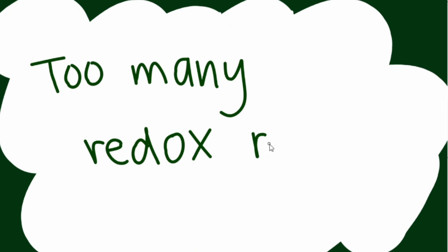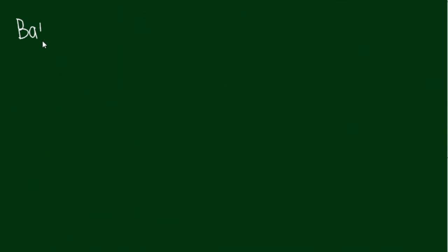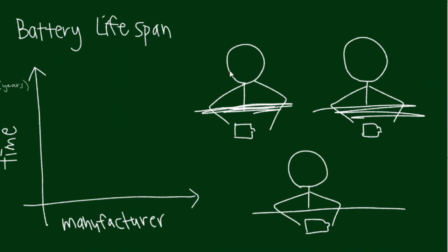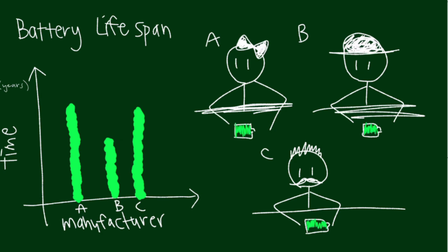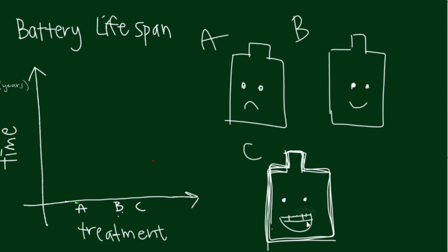The electrons lose a place to be stored inside the anode and therefore cannot flow to create electricity. Of course, the lifespan of rechargeable batteries varies by manufacturer, model, and treatment.